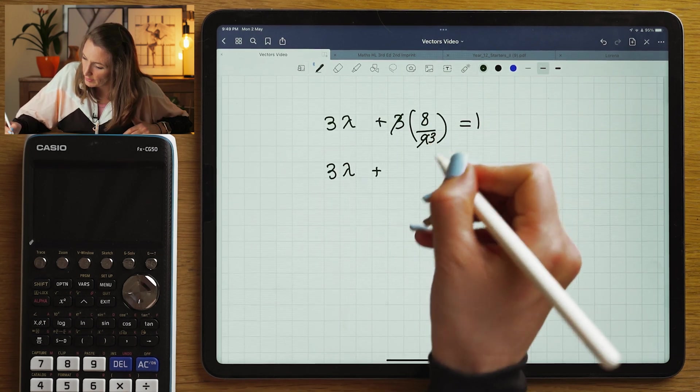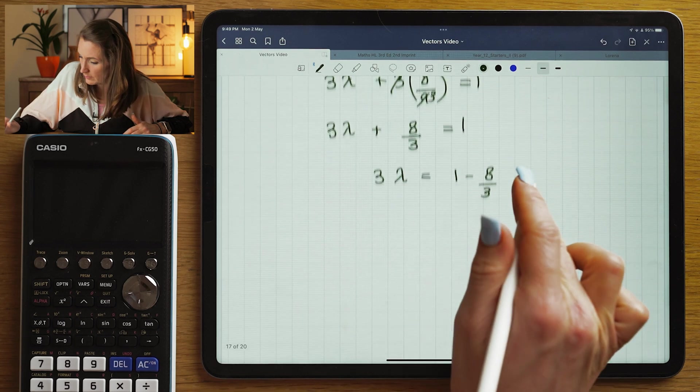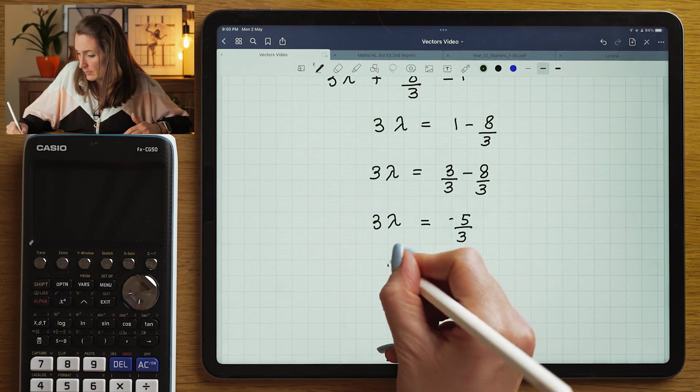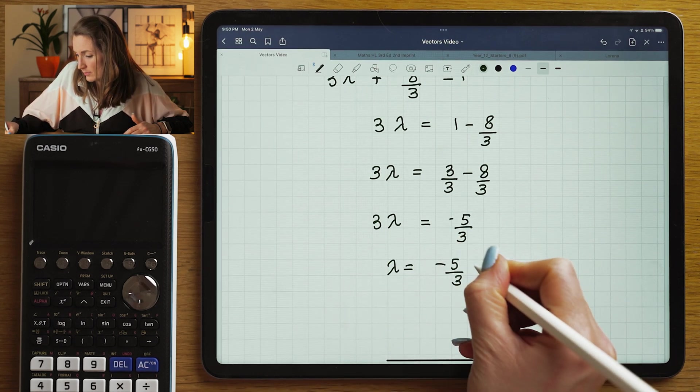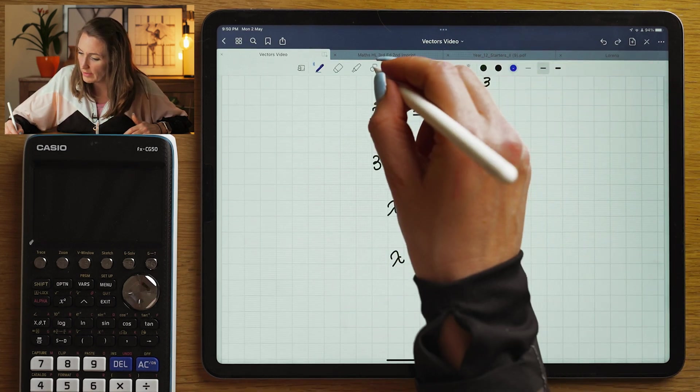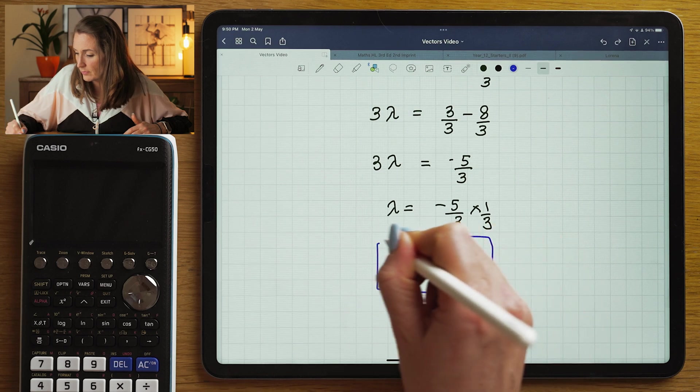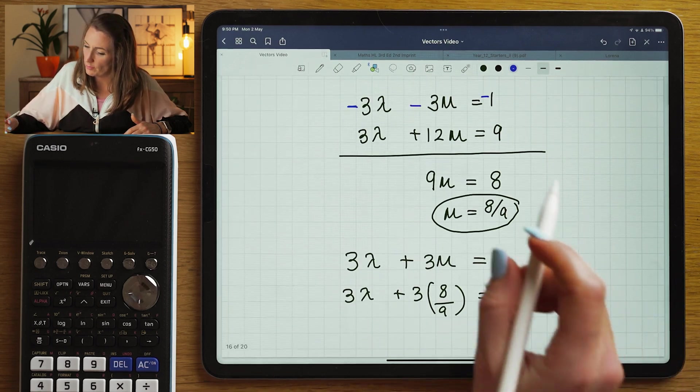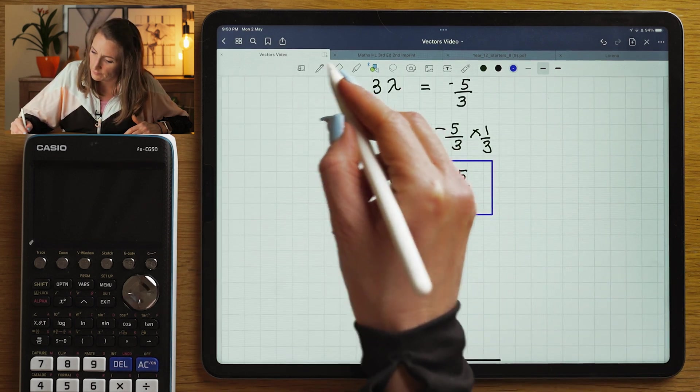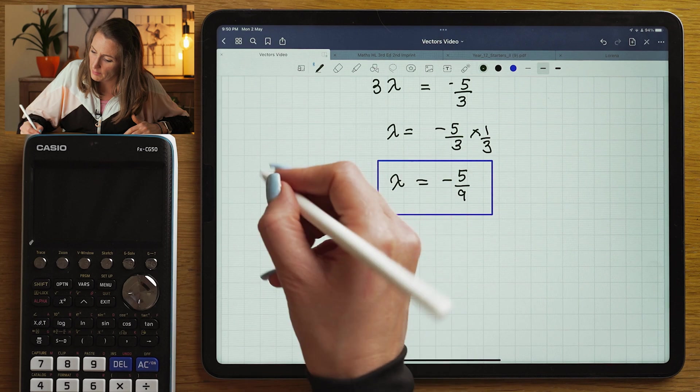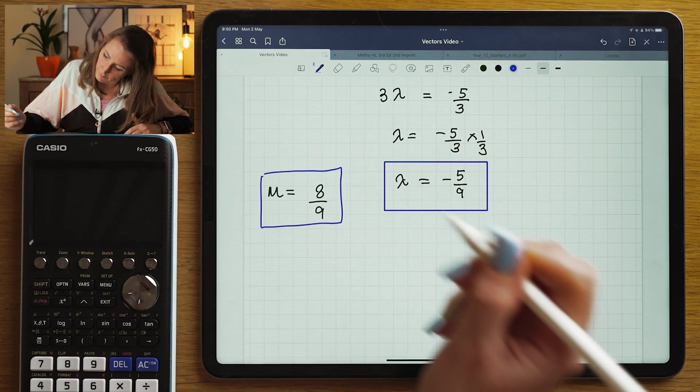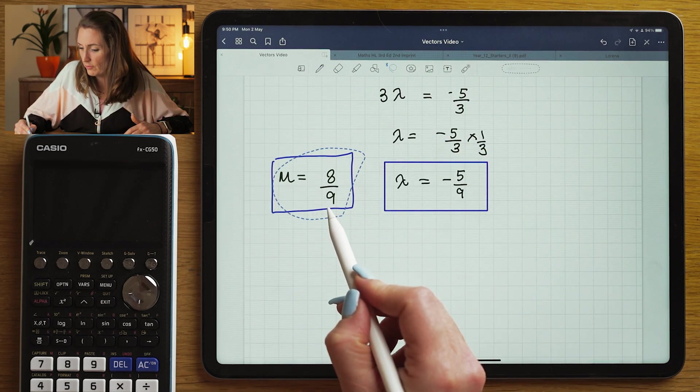Let's cancel that with 3. So now we've solved that simultaneous equation. So we have got two values. We've got mu is equal to 8 over 9 and lambda is equal to minus 5 over 9.